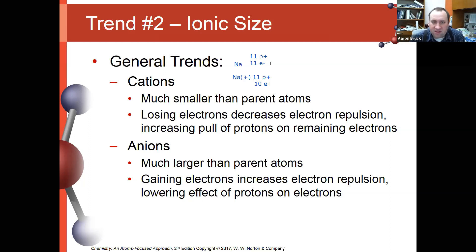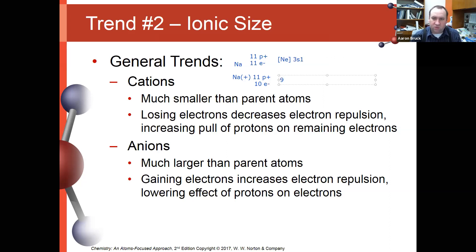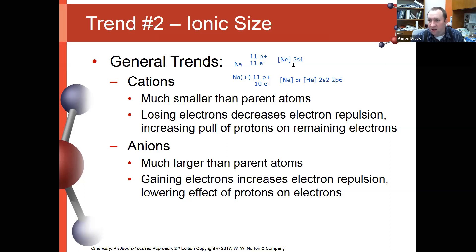The other thing that happens for cations, especially, is we tend to lose energy levels. The configuration for sodium was [Ne]3s1. If I take away that 3s1, all that's left is neon, which we can rewrite as [He]2s²2p⁶. Either way, we've lost the third energy level entirely, and that alone is going to shrink the size of the atom by losing that extra energy level.